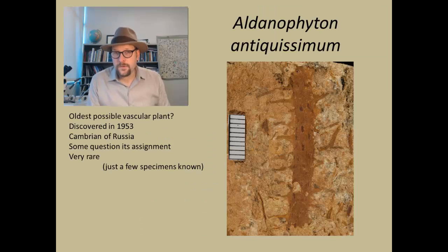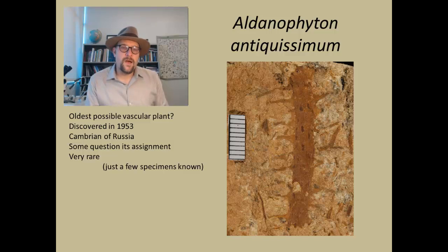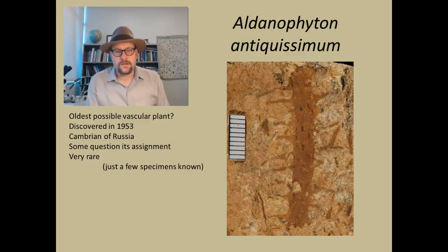The oldest, most contentious possible land plant that has been described is Allodontophyton, which was discovered in Siberia and Russia, and described in the 1950s as a possible early vascular plant. However, many people since then have questioned whether this is an actual true vascular plant; many have argued that it is actually a green algae, and not necessarily a bryophyte.